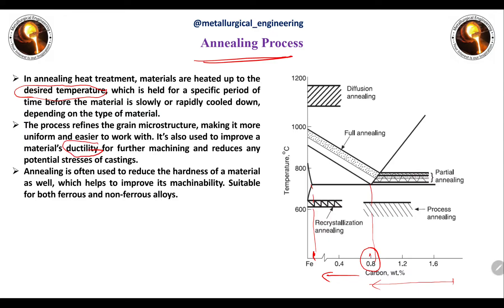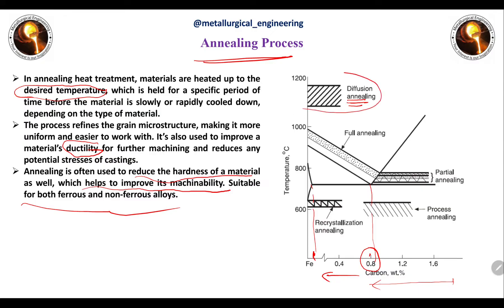Annealing is primarily used to improve the ductility of the material and relieve residual stresses. It is also often used to reduce the hardness of the material, which helps improve its machinability. Annealing is suitable for both ferrous and non-ferrous alloys. Looking at the iron-carbon phase diagram, it shows different temperature ranges for different kinds of annealing processes. Diffusion annealing generally takes place between 1100 to 1200 degrees Celsius.